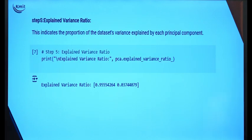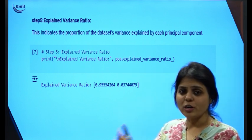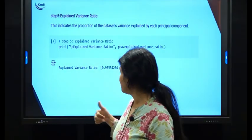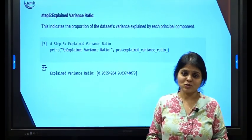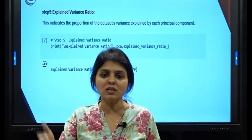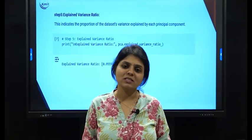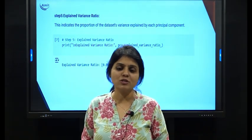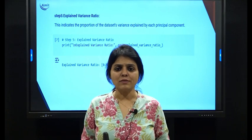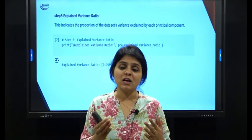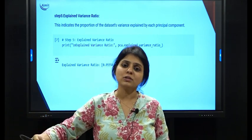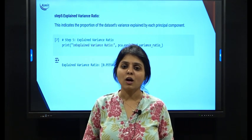Next we calculate the variance ratio, which indicates the proportion of the dataset's variance explained by each principal component — that is, how much each component contributes to output prediction. The variance ratio is 95%, meaning all input features contribute nearly equally to the prediction of grade. Hence we cannot reduce any of them. In a real dataset with 100 different input features, PCA would be very useful for this kind of analysis.